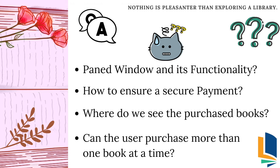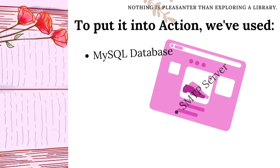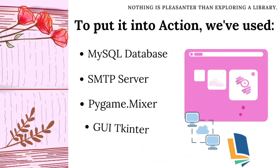Where do we see the purchased books? Many people tend to misplace the books, so all your purchased books will be available on the My Books page. Can the user purchase more than one book at a time? Yes, we can definitely buy more than one book using the add to cart feature, where you can even deselect the book if you wish to.